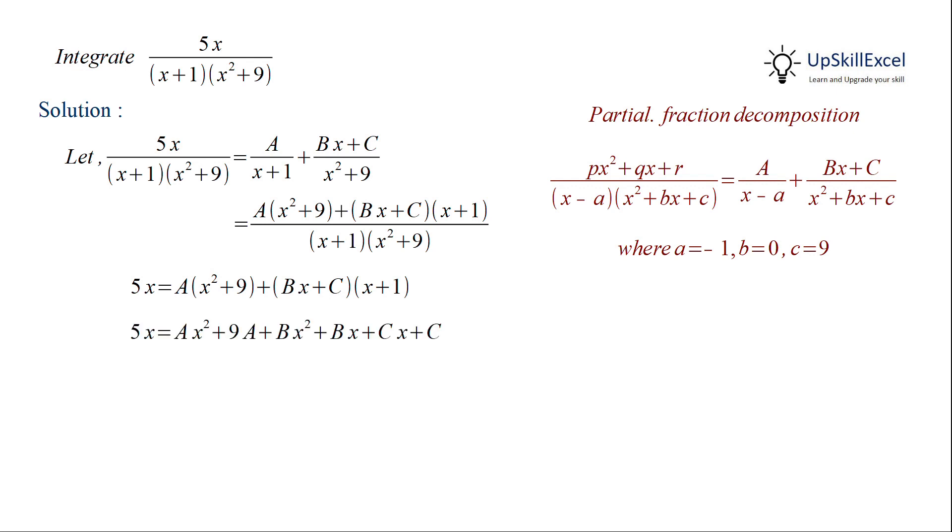Expanding the products and then aggregating the coefficients in terms of power of x, we get 5x is equal to a plus b x squared plus b plus c x plus 9a plus c. Now we can compare the coefficients of power of x. So from x squared we get a plus b equal to 0, from x we get b plus c equal to 5, and from the constant term we get 9a plus c is equal to 0.